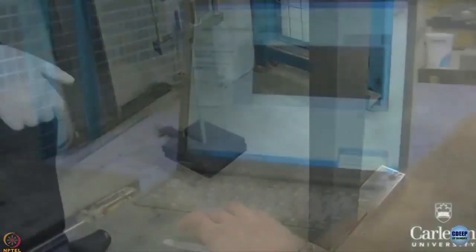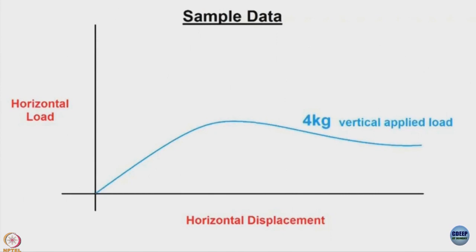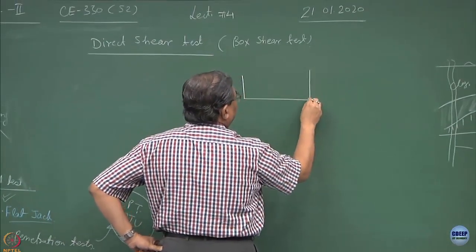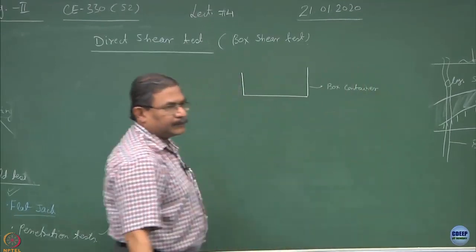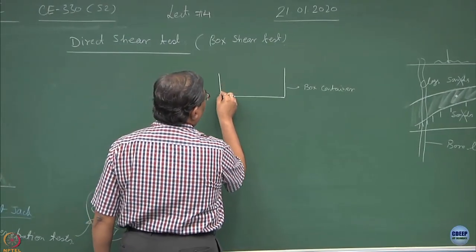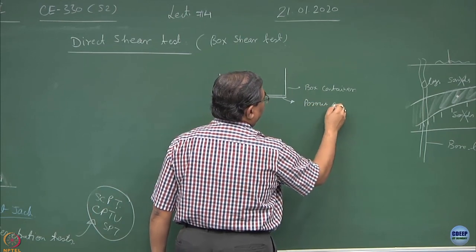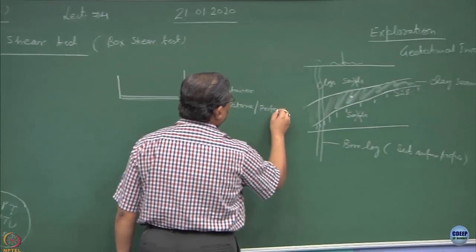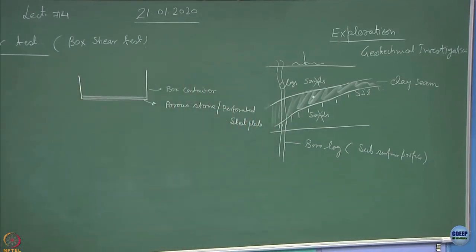In short, this is the container or the box in which depending upon the type of test we are doing, I can place a drainage layer. This is what is known as a porous stone or a perforated steel plate. And this is for the drained test.